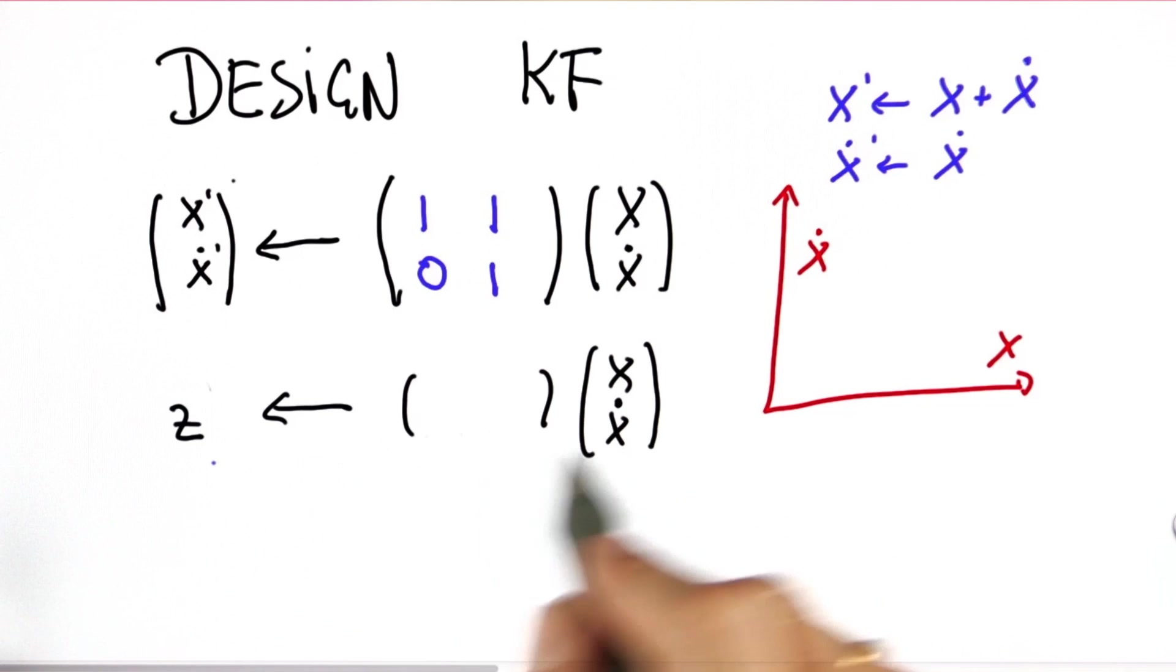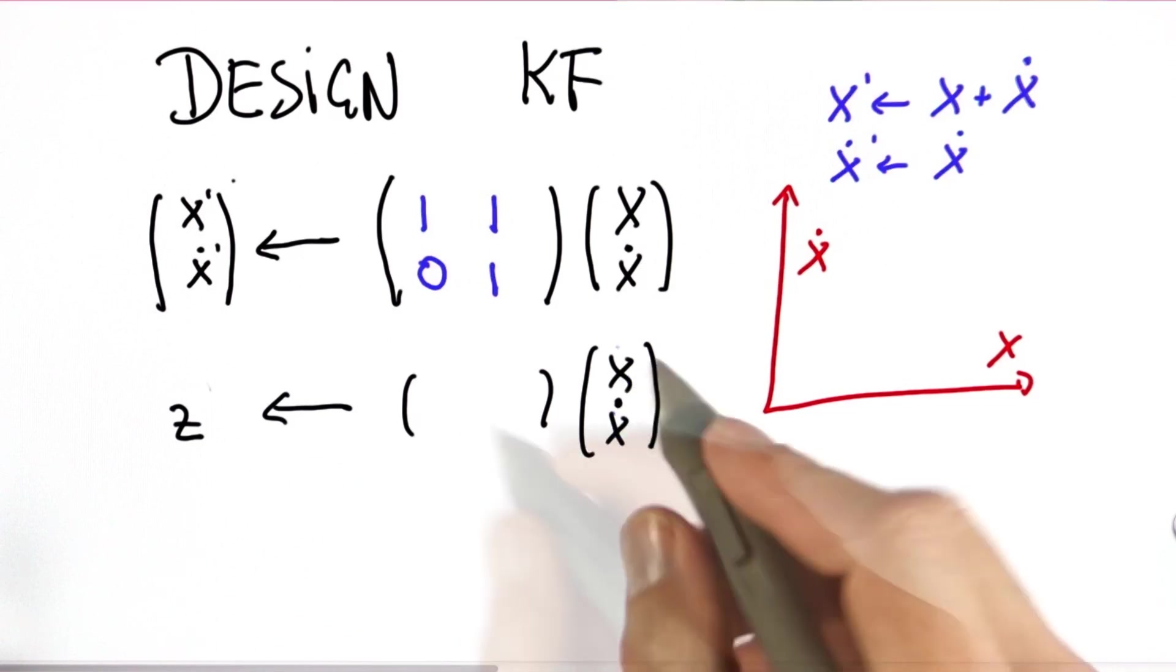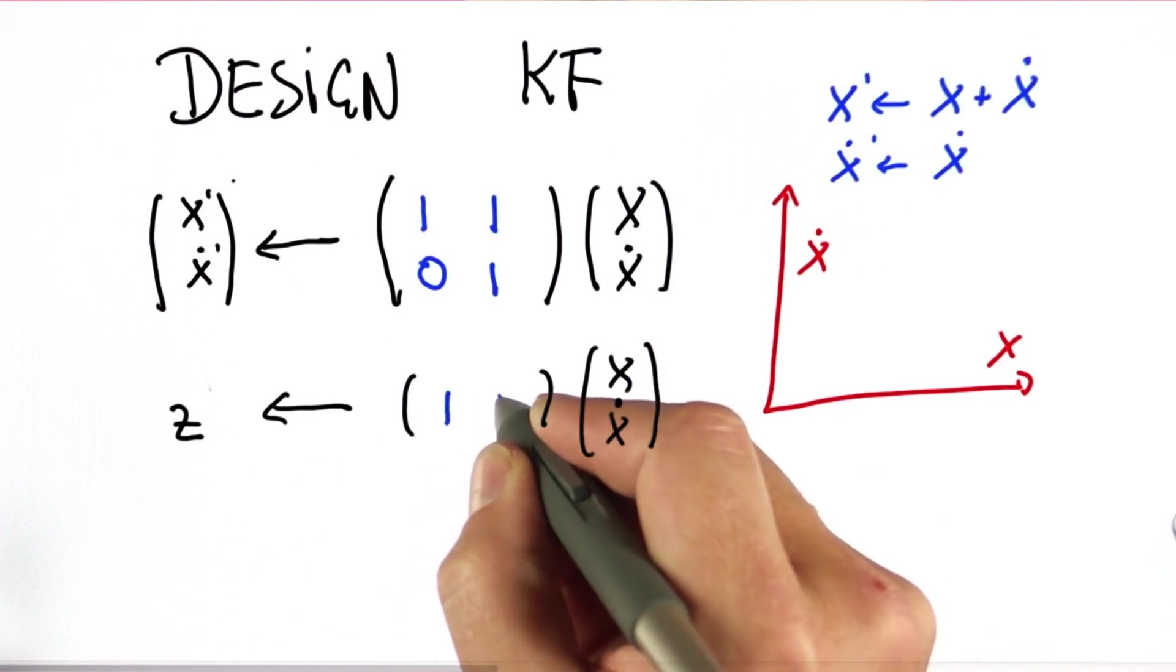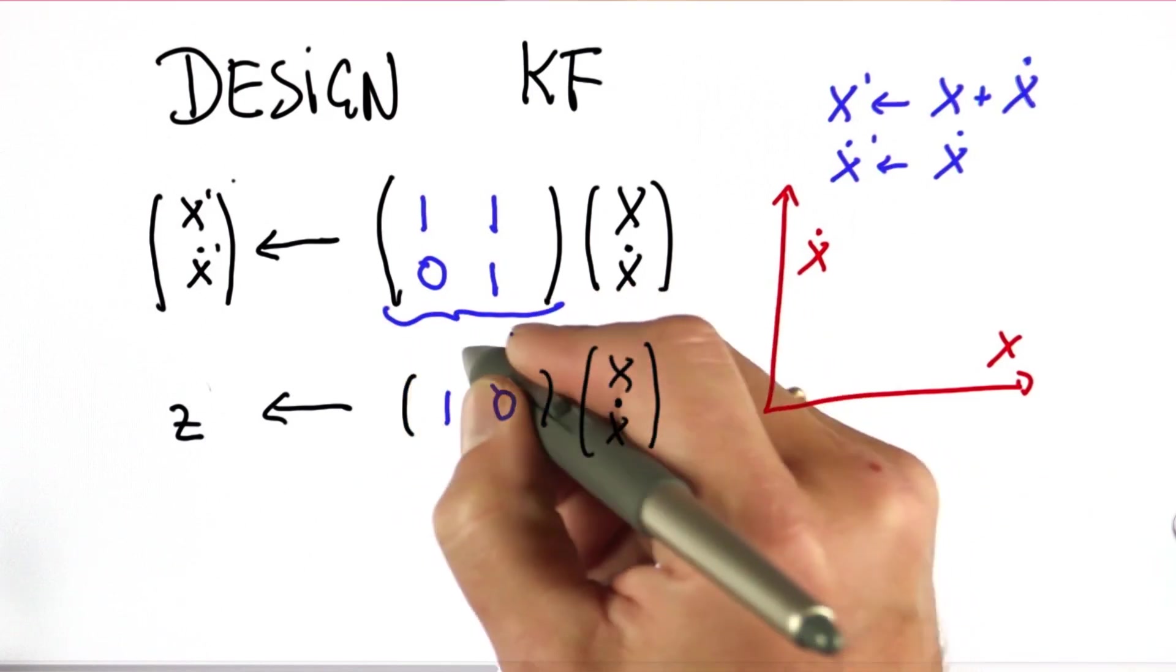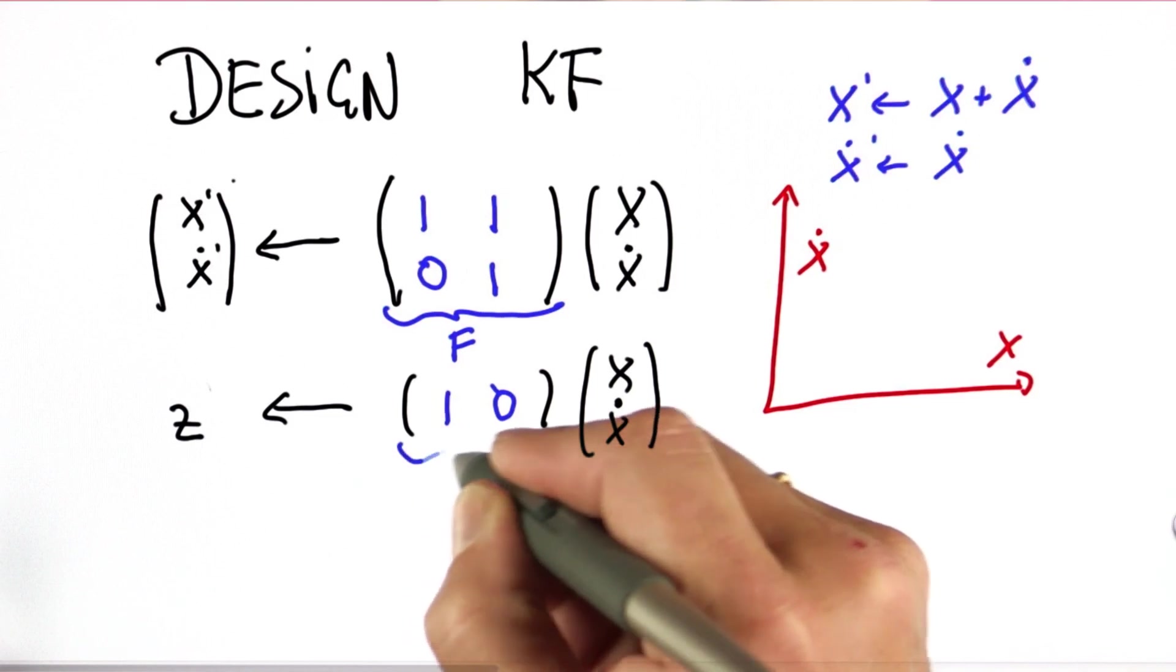And for the measurement, we only observe the first component, the place, not the velocity, and that uses a vector or matrix like this. So this matrix will be called F, and this is H.